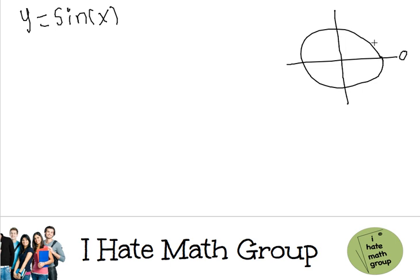Now I know this is 0, this is pi over 2, this is pi, and this is 3 pi over 2, and this is also 2 pi.